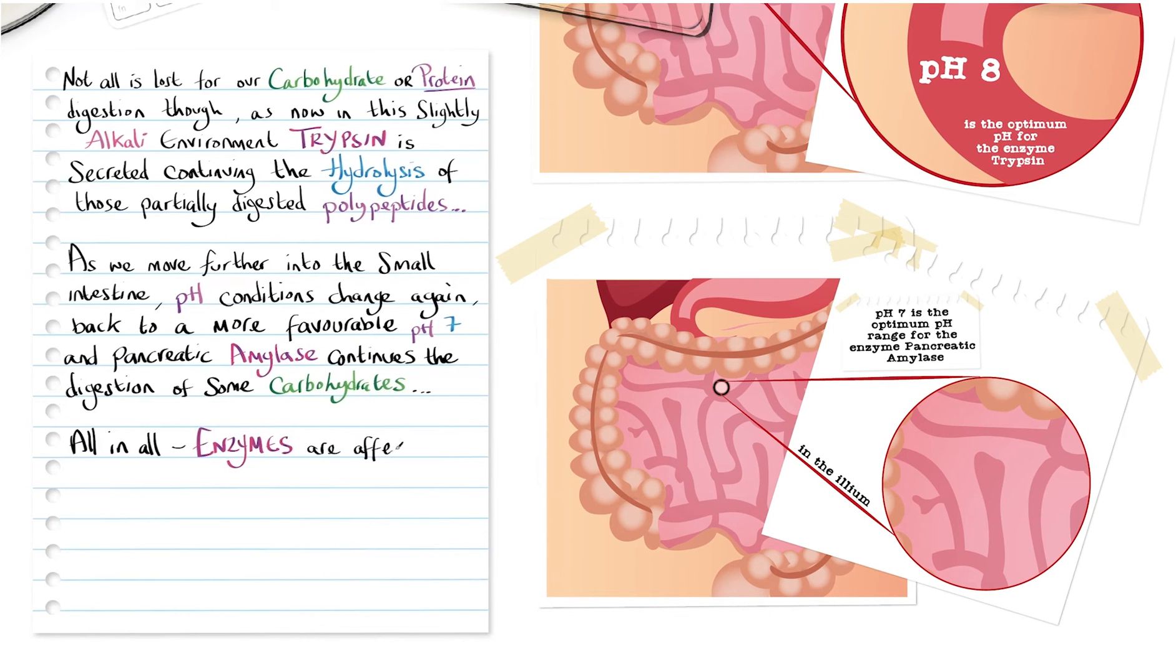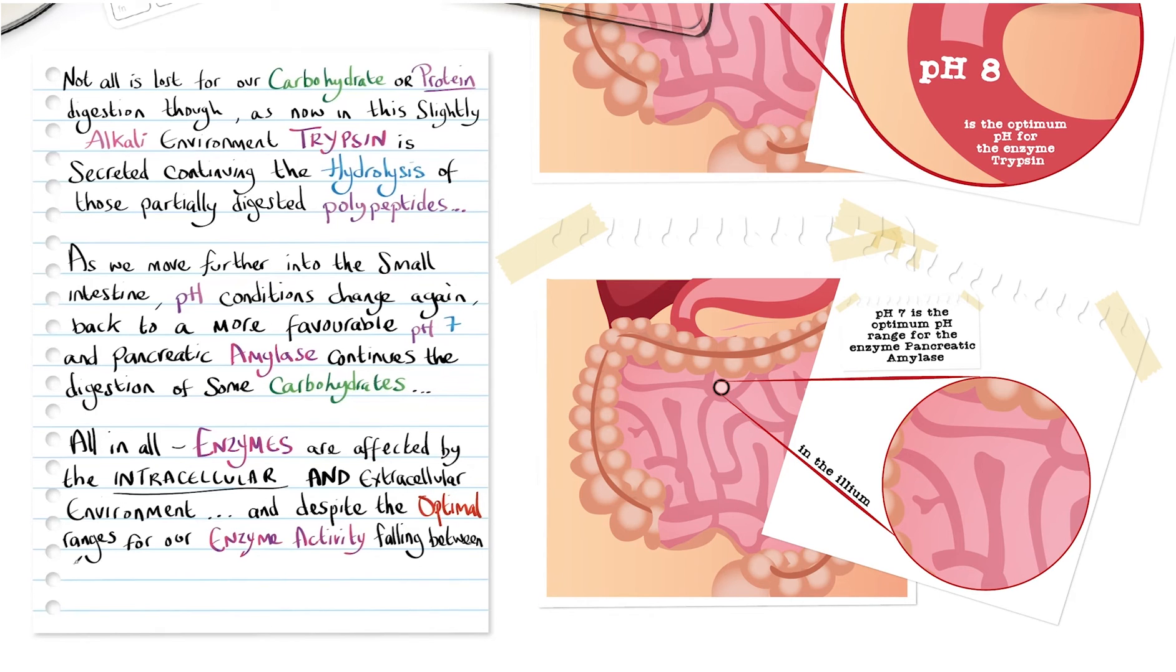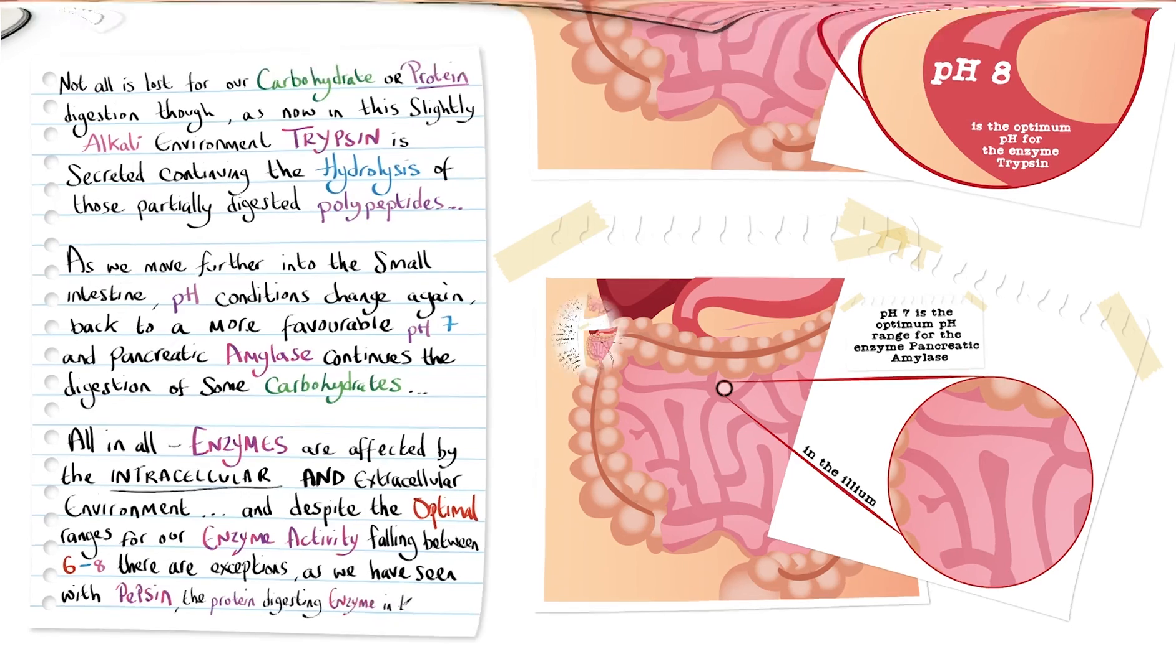All in all, enzymes are affected by the intracellular and extracellular environment, and despite the optimal ranges for our enzyme activity falling between 6 and 8, there are exceptions. As we have seen with pepsin, the protein digesting enzyme in the stomach.